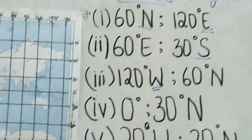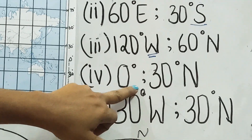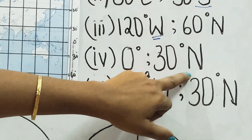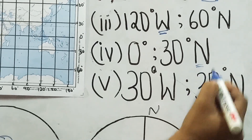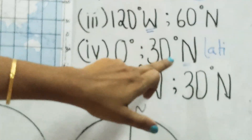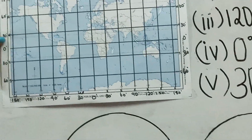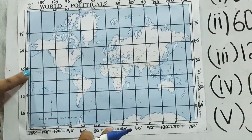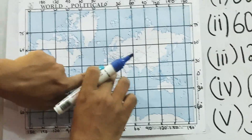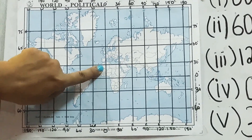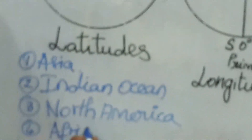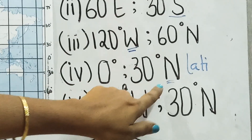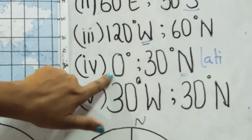The fourth coordinate: 0 degree and 30 degree north. Since north is mentioned, 30 degree north is the latitude, which means 0 degree represents the longitude. When 0 degree longitude and 30 degree north latitude meet, the destination is the continent of Africa. When 0 degree is given, be careful — it may be either the equator or the prime meridian. Check the other coordinate to determine whether it is a latitude or longitude.